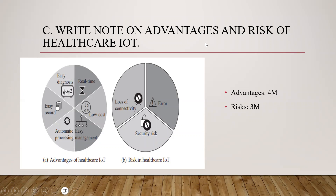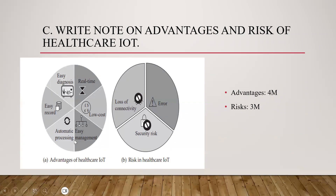For the last question — write a note on advantages and risks of healthcare IoT (7 marks) — start by writing about healthcare IoT and draw the diagram if needed. For advantages, list and explain: early diagnosis, real-time monitoring, low cost, easy management, automatic processing, and easy records — explaining all these covers four marks. For risks, list and explain: loss of connectivity, security risk, and error — explaining all three risks covers three marks. Totally, this question is for seven marks.